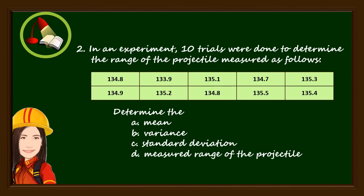Number 2. In an experiment, 10 trials were done to determine the range of the projectile measured as follows. Determine the mean, the variance, the standard deviation, and the measured range of the projectile.